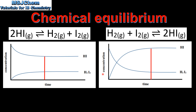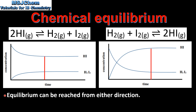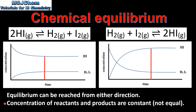Next we look at the concentration-time graph starting with hydrogen and iodine forming hydrogen iodide. Initially the concentrations of hydrogen and iodine are high and decrease as the forward reaction proceeds. The initial concentration of hydrogen iodide is zero and increases as the reaction proceeds. At the point in time indicated by the red line, all concentrations become constant, shown by straight lines. The system is at dynamic equilibrium. This shows that equilibrium can be reached from either direction, and that the concentrations of reactants and products are constant but not equal.